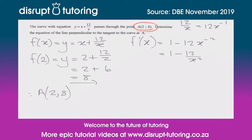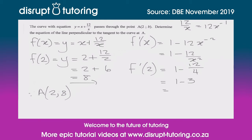We're trying to find the gradient at point A, which has an x-value of 2. So the gradient is f'(2) = 1 minus 12 over 2 squared, which is 1 minus 12 over 4, giving us 1 minus 3. That means our gradient at that point is minus 2, so it's downward sloping.